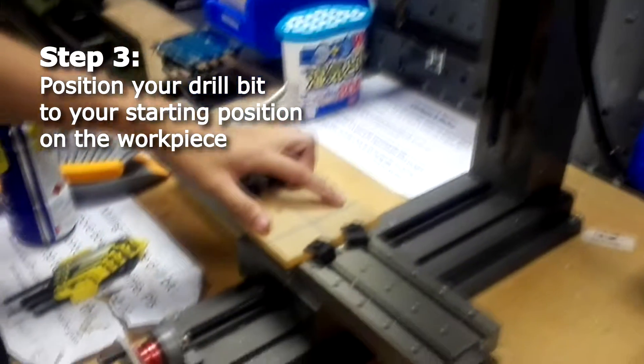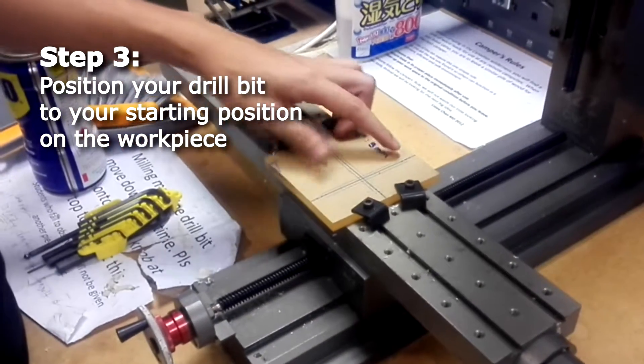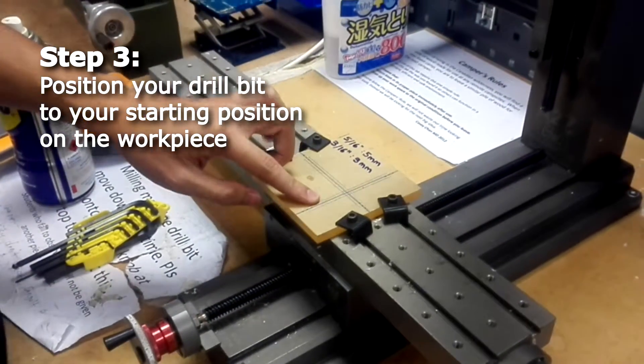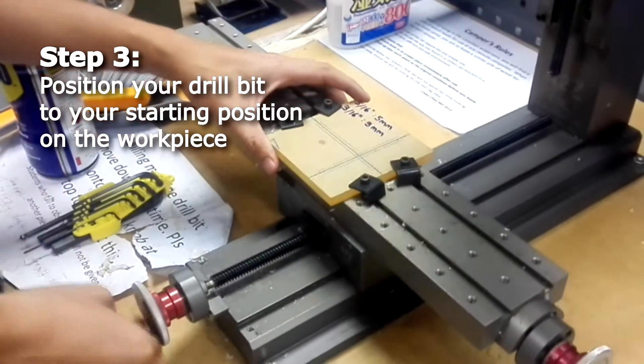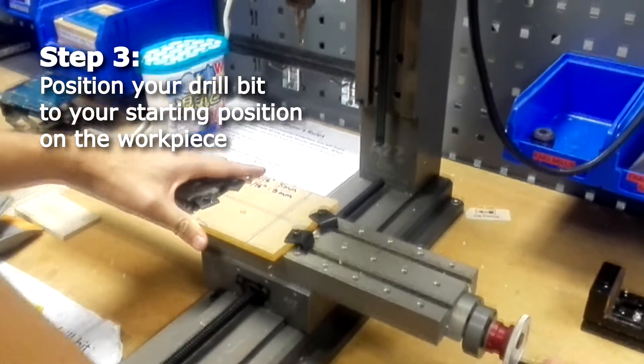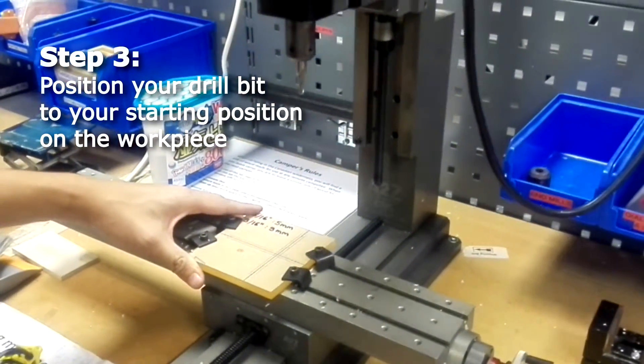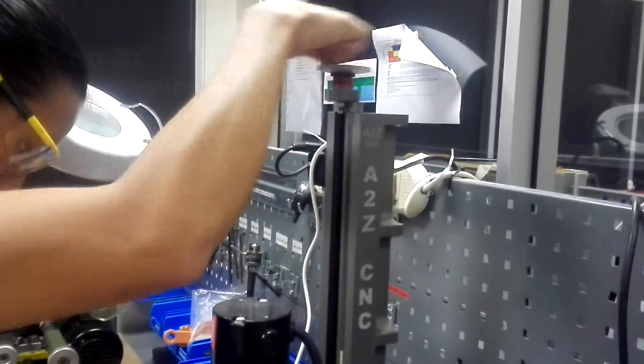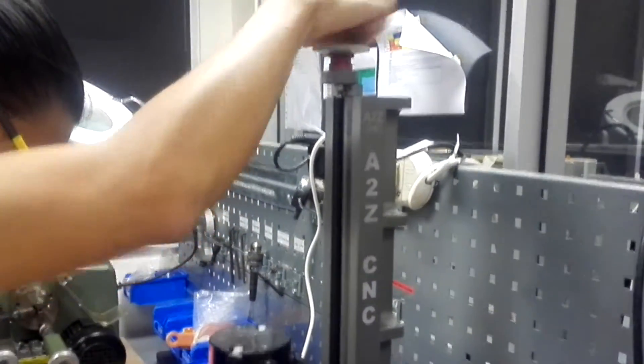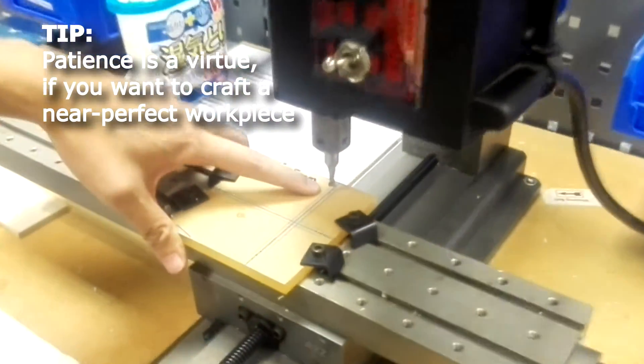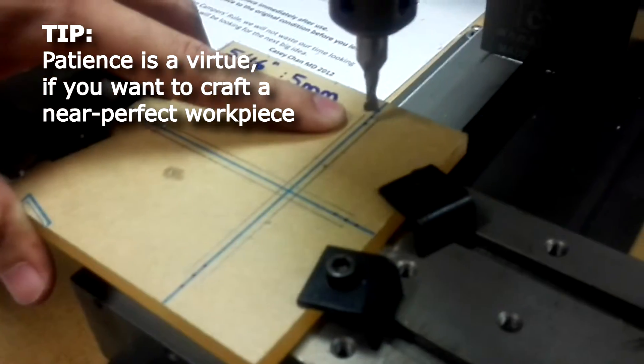We need to position the drill bit to our starting point on the workpiece. For this workpiece, we'll be moving the 3/16 drill bit from top to bottom, then from right to left.